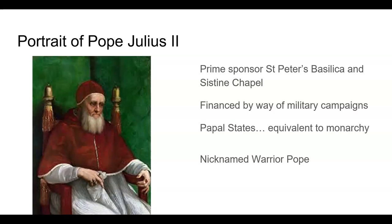Pope Julius II was the prime sponsor of the arts and commissioned much of the works in St. Peter's and the Sistine Chapel, and was very connected to Raphael. The political impact of the Pope's portraits is significant. Pope Julius II financed a lot of art by way of military campaigns. He believed in the power of the church, was the ruler of the papal states, nicknamed the warrior Pope, and had bribed the cardinals to have the name Julius selected so that he could emulate Julius Caesar. He was a temporal and aristocratic ruler known to have a violent temper and often rude.